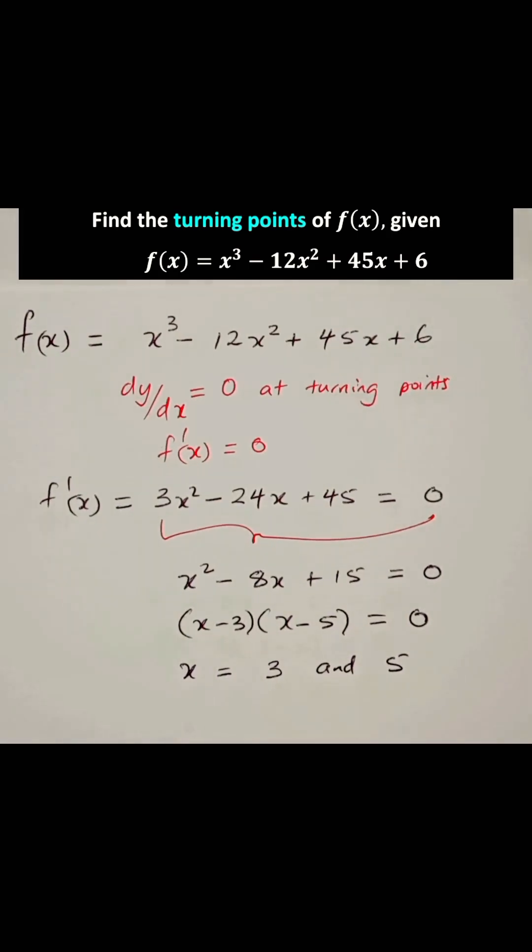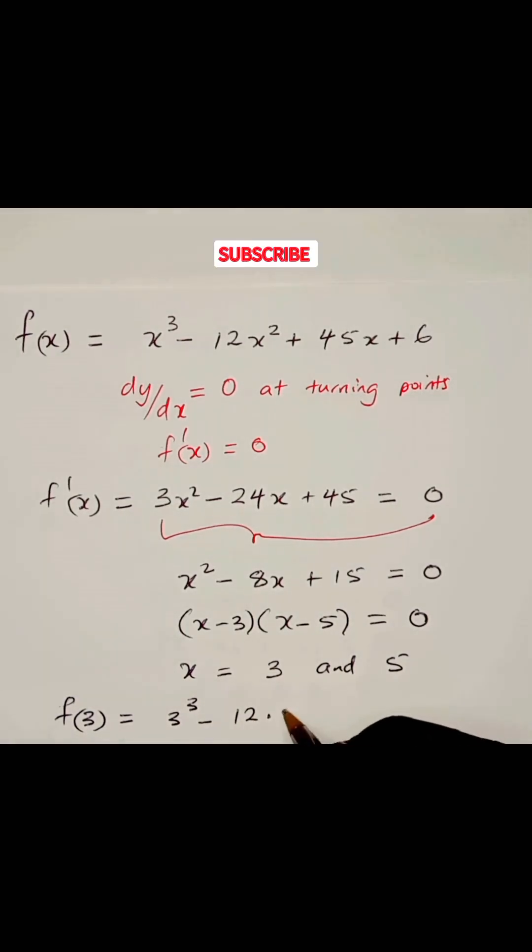Now, let's begin with x is equal to 3. So we have f(3) is equal to 3³ - 12 × 3² + 45 × 3 + 6. We are just substituting 3 into that.